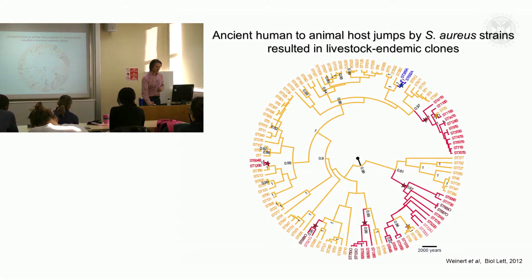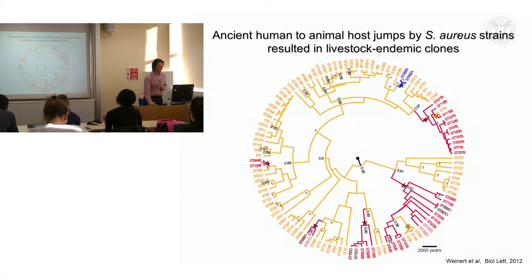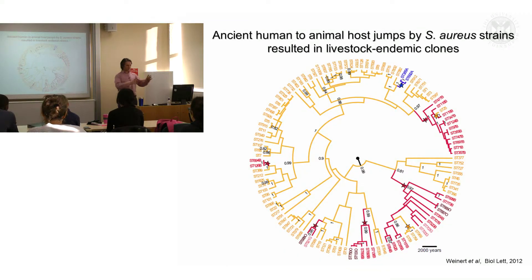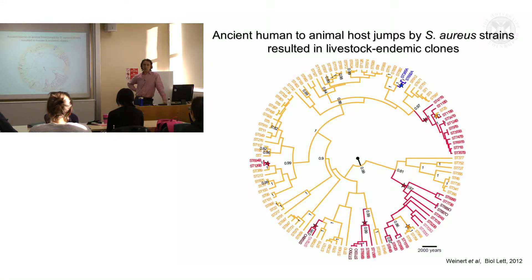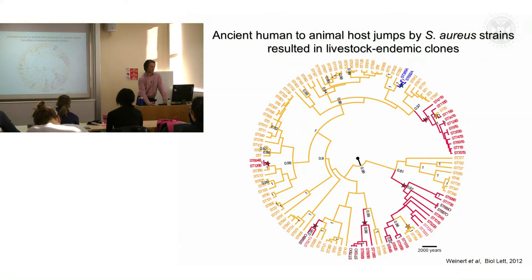BEAST allows us to predict the ancestral state for the tree in terms of host association. Based on the colouring of the branches and internal nodes, the ancestral state for Staph aureus is predicted to be human. However, at several points in the tree — indicated by these stars — the capacity to infect ruminants has evolved on multiple occasions during the evolutionary history of Staph aureus, presumably through human-to-animal host jump events followed by adaptation of the bacteria to their new host.